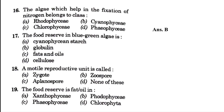The food reserve in blue-green algae is called — blank: cyanophycean starch, globulin, fats and oils, or cellulose. The answer is option A, that is cyanophycean starch. A motile reproductive unit is called — blank: zygote, zoospore, aplanospore, or none of the above. The answer is option B, that is zoospore, which is flagellated.